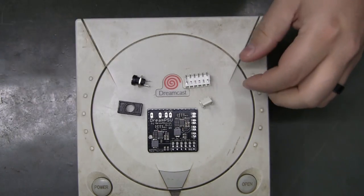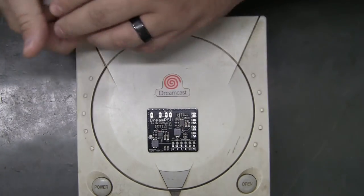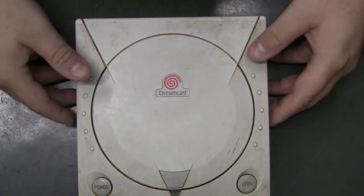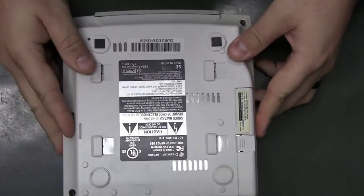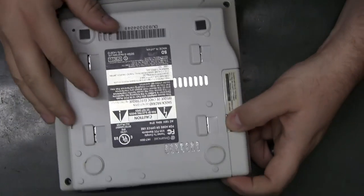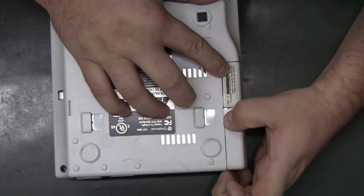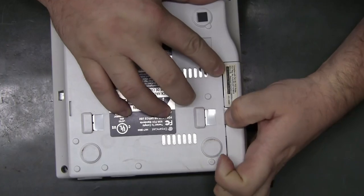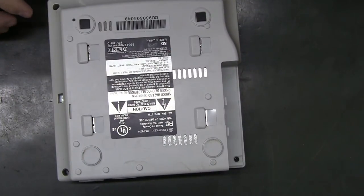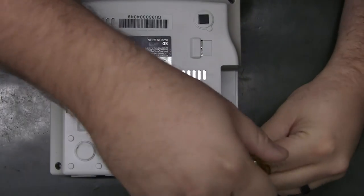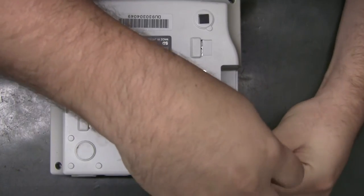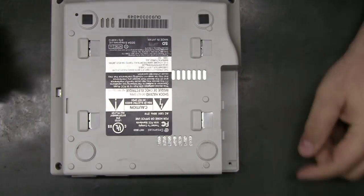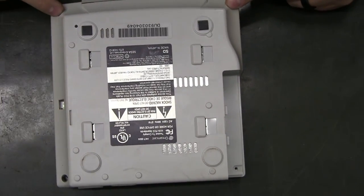And of course I picked the dirtiest Dreamcast that I had and it is a Rev 0. So to start with, taking the modem off to access the screw under here and then you'll have three more.